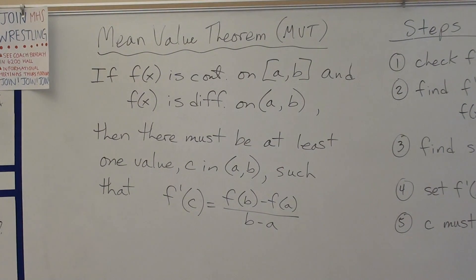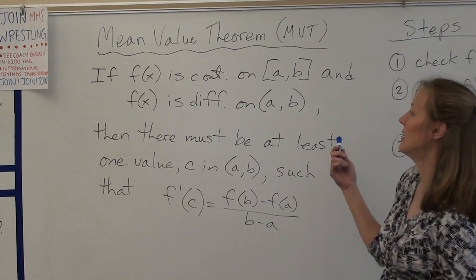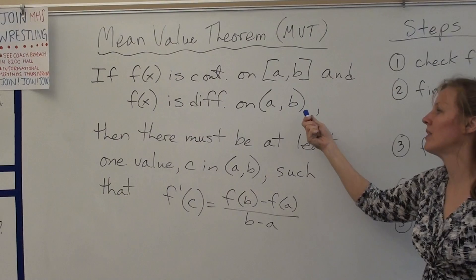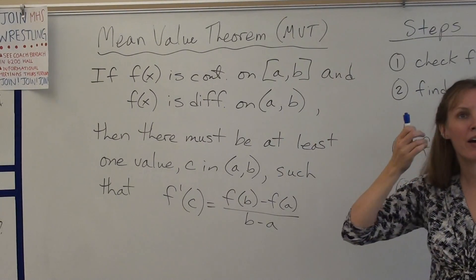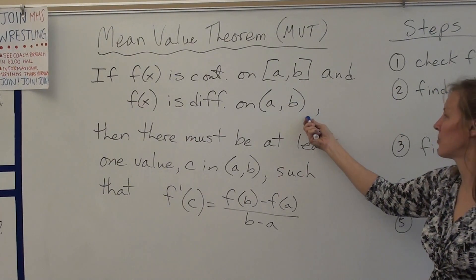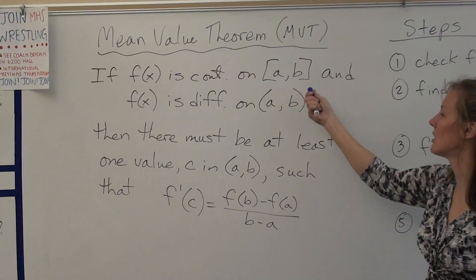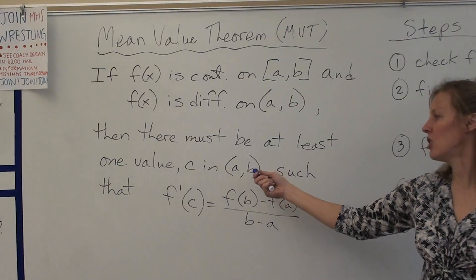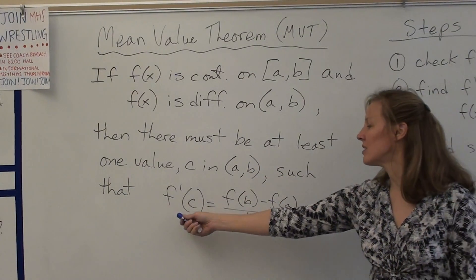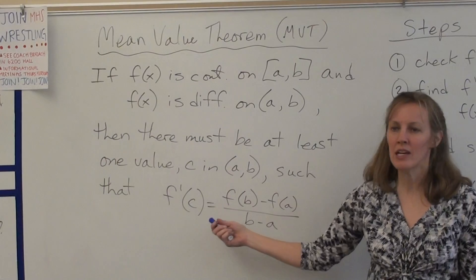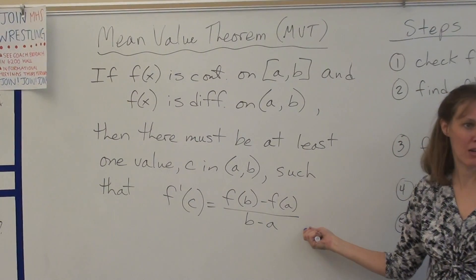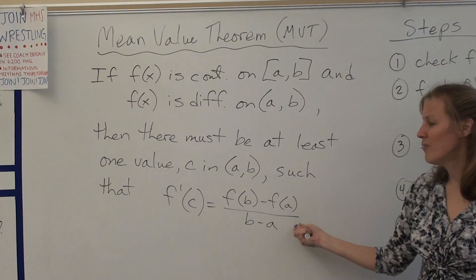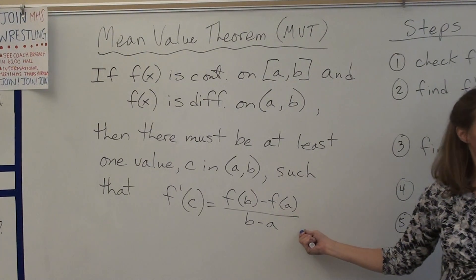Here's the theorem itself. Mean Value Theorem says if a function is continuous on a closed interval [a,b] and differentiable on the open interval (a,b), then there must be at least one value c in the open interval such that the derivative at that point equals f(b) - f(a) over b - a.